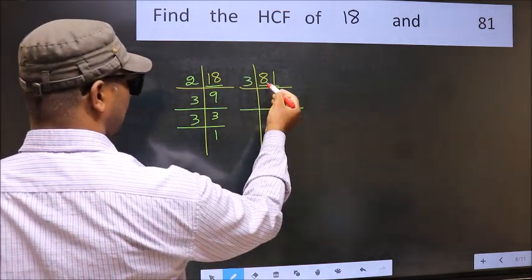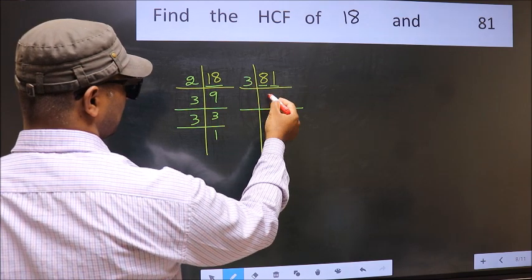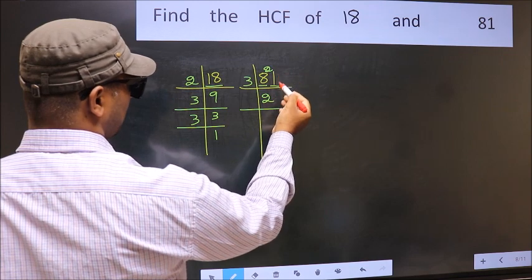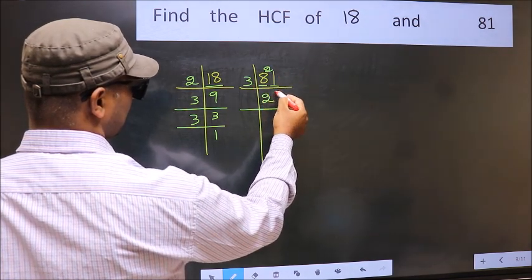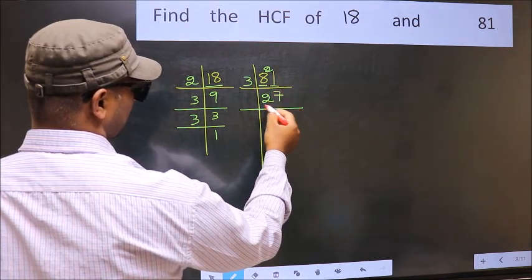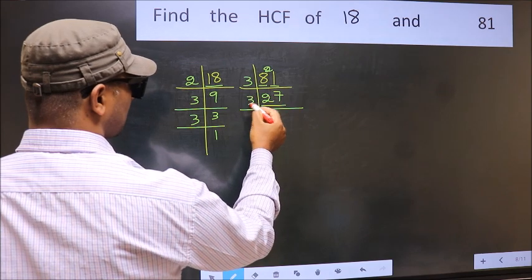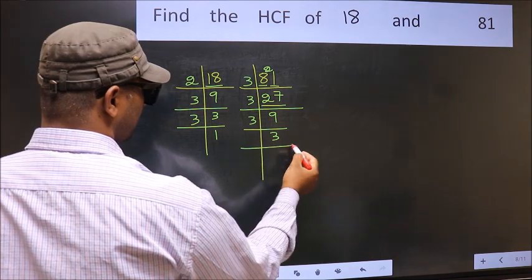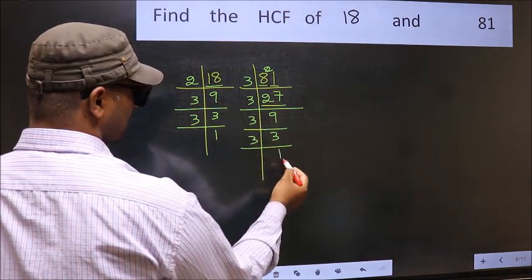First number 8. A number close to 8 in the 3 table is 3 times 6. 8 minus 6 is 2, carried forward gives 21. When do we get 21 in the 3 table? 3 times 7 is 21. Now 27 is 3 times 9. 9 is 3 times 3. 3 is a prime number, so 3 ones is 3.